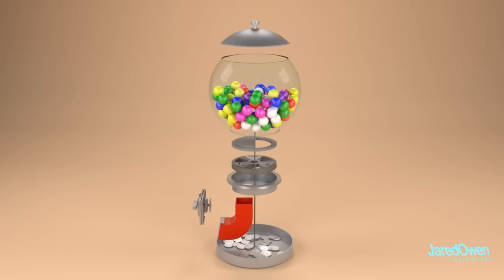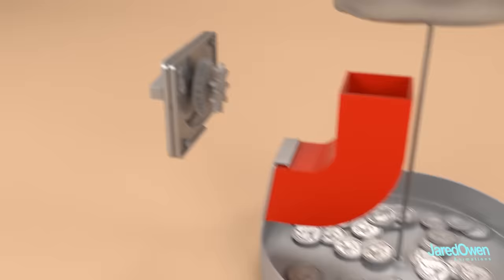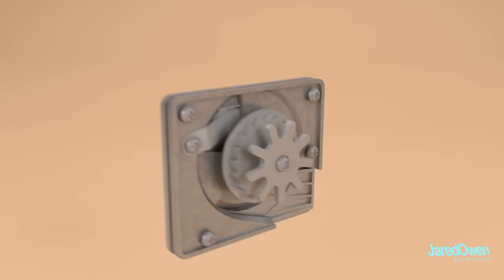The main parts of the mechanism are the dispensing disk, the chute, the coin bin, and the coin mechanism. By far, the most complex piece is the coin mechanism. Let's start there.